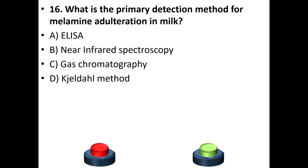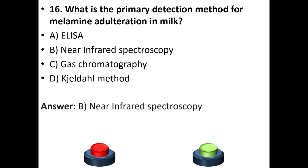Sixteenth question: What is the primary detection method for melamine adulteration in milk? A. ELISA. B. Near infrared spectroscopy. C. Gas chromatography. D. General method. Your answer is option B: Near infrared spectroscopy.